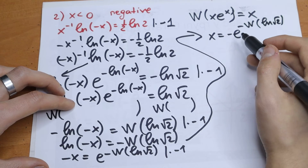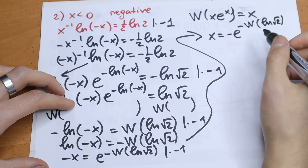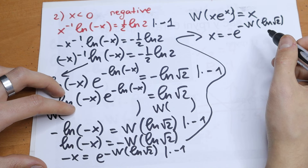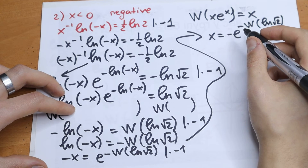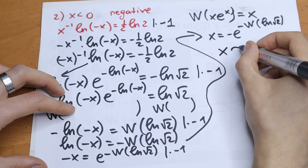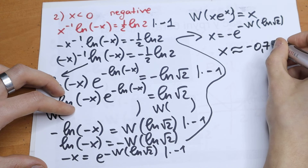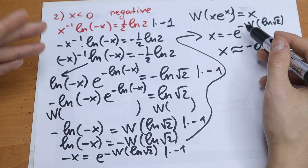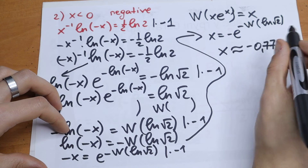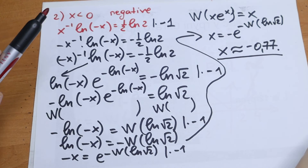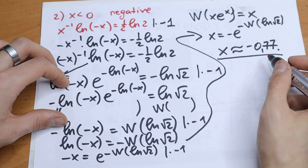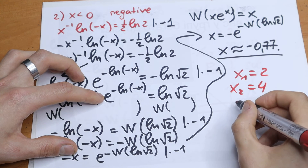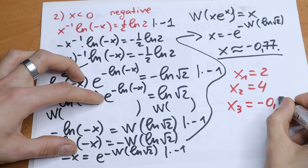This is our answer when x is negative. I calculated it using a math library: this root equals x₃ approximately equal to minus 0.77. You can calculate this, you can look up this function on the internet and simplify it yourself.